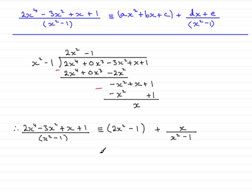So when I compare this to what we have to write up here, that is ax squared plus bx plus c plus dx plus e all over x squared minus 1, let's put a bracket around that,